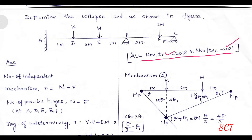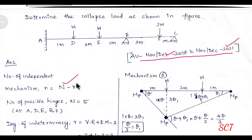If you look at the beam, the number of mechanisms is given by: small n equal to capital N minus R, where capital N is the number of possible hinges.